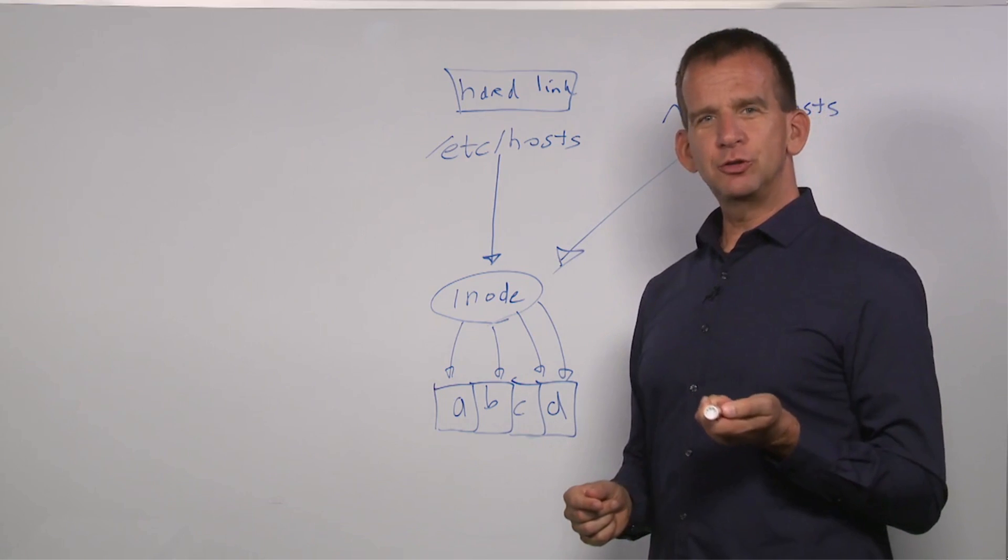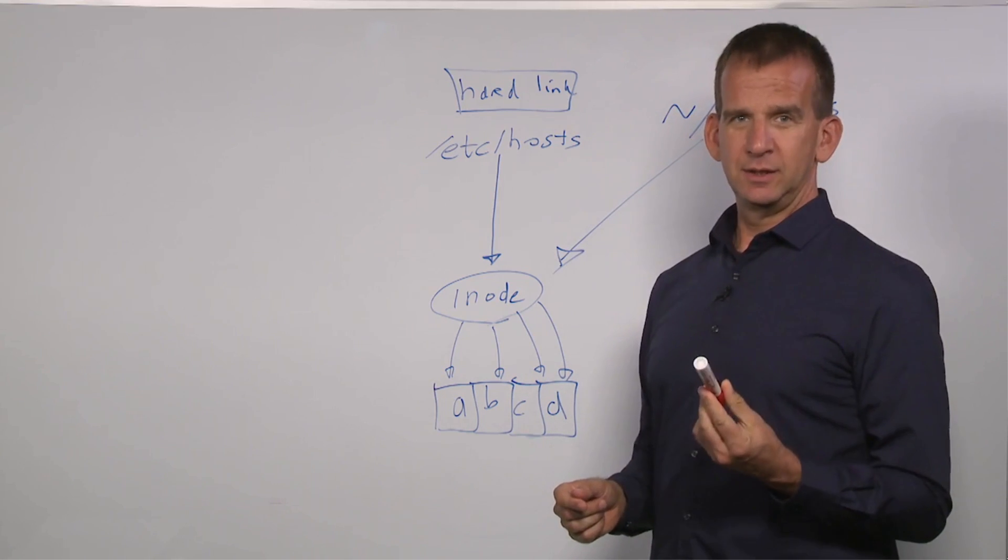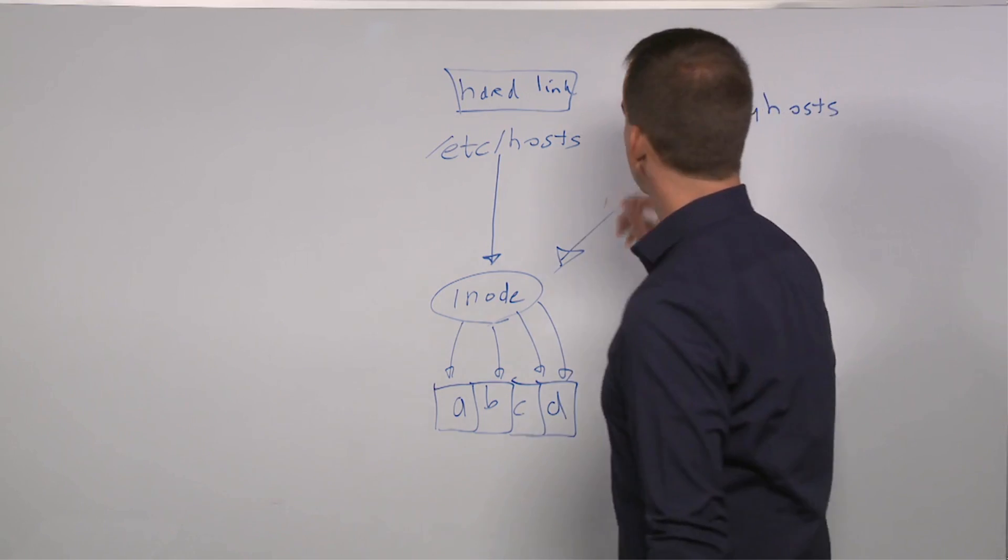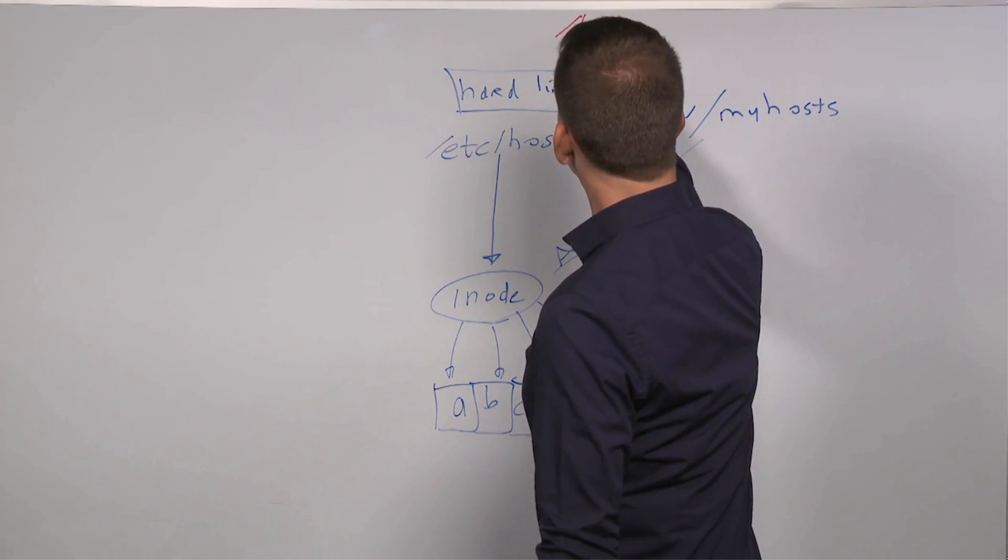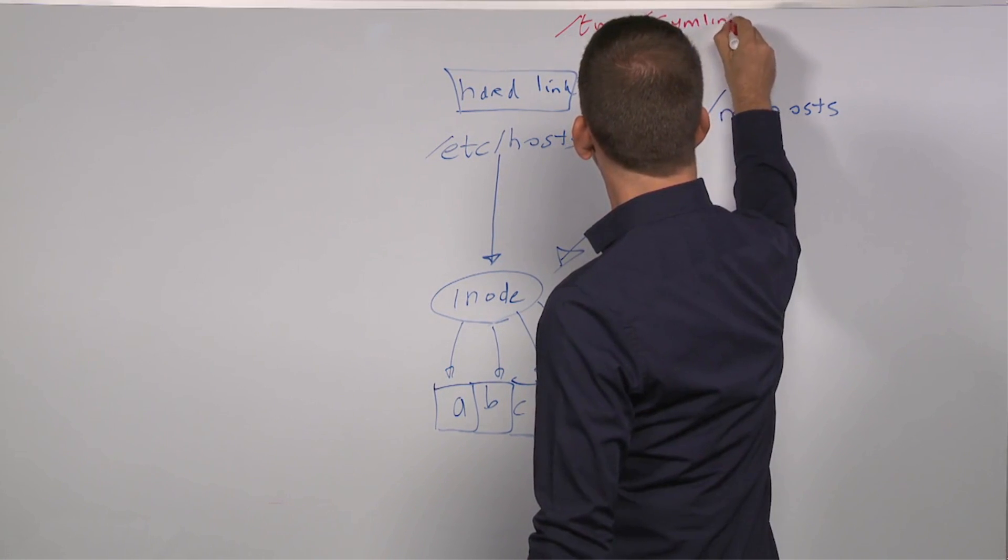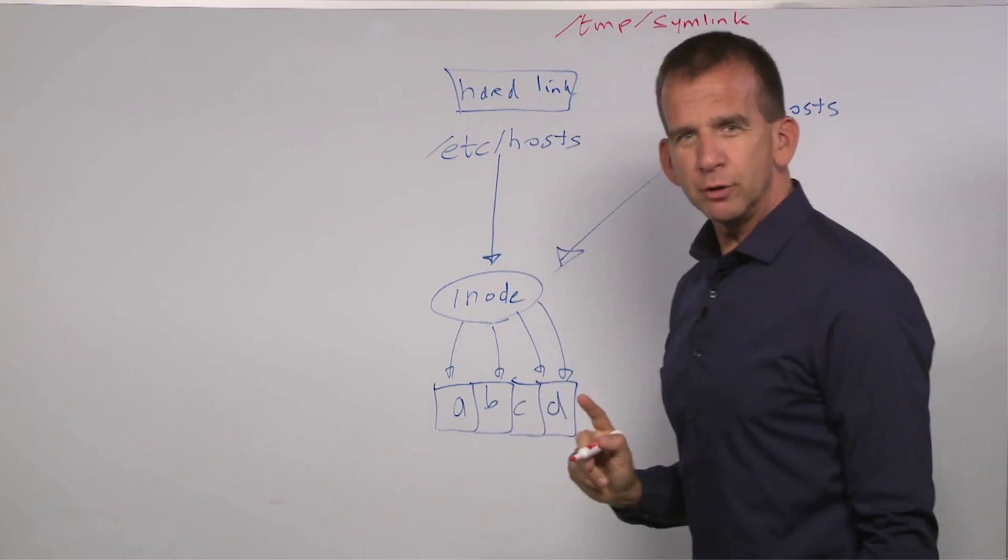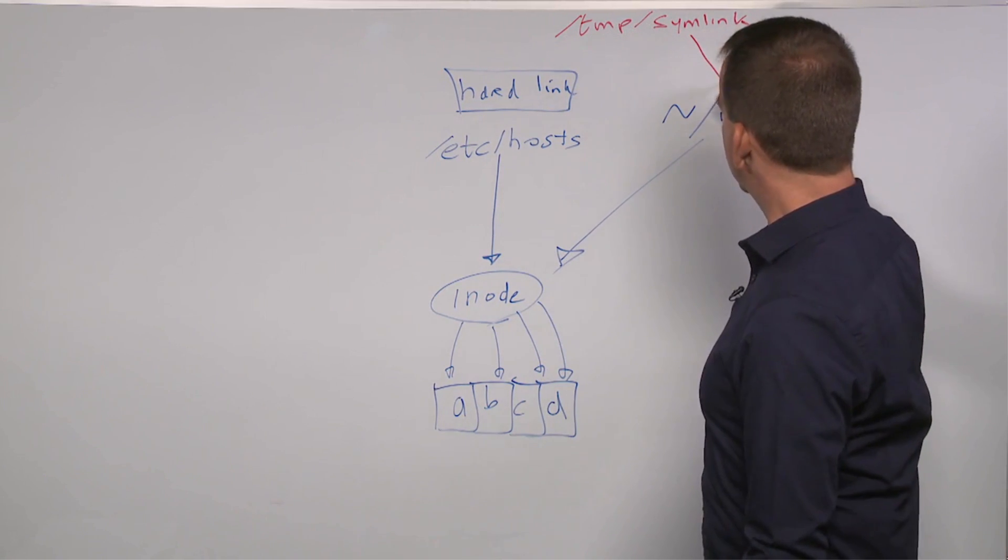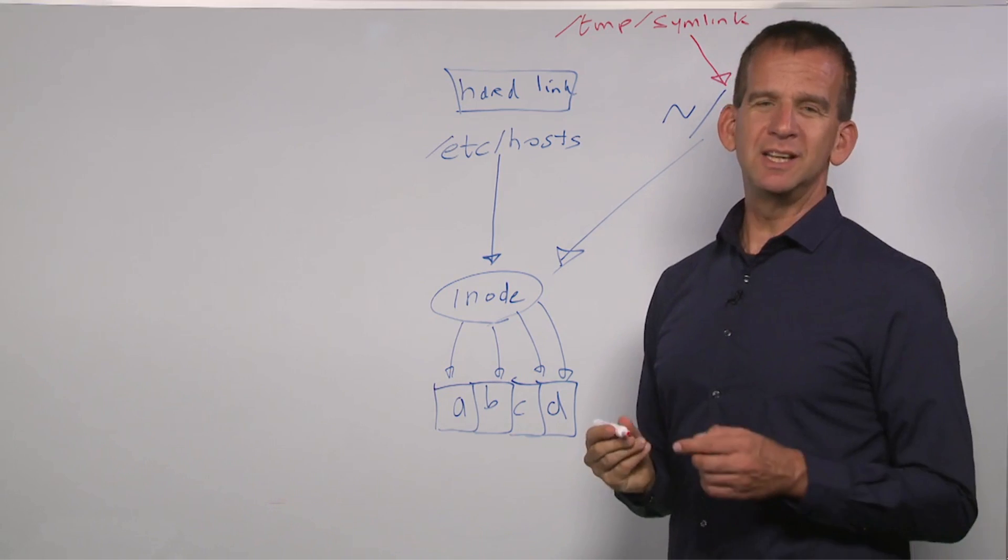Now, in the Linux file system, there is also another way of creating links, and that is the symbolic link. Now, the difference between a symbolic link and a hard link is that a symbolic link doesn't point directly to the inode.